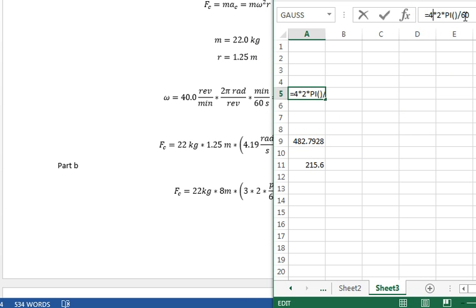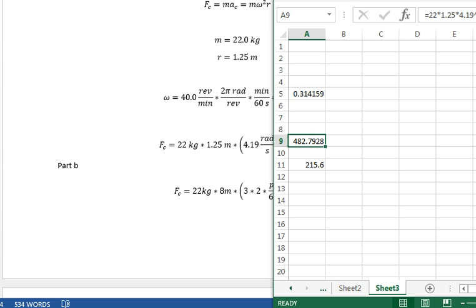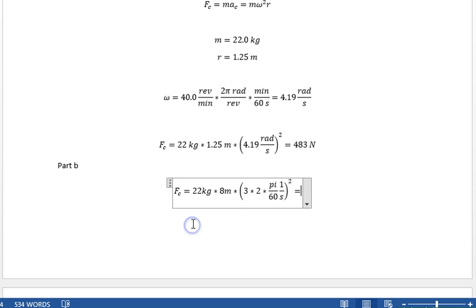So if we go up here, I'll move this a little bit, go up here, change that to three, so it gives us 0.314. And so instead of 4.19, we've got 0.314, 2.7 newtons.